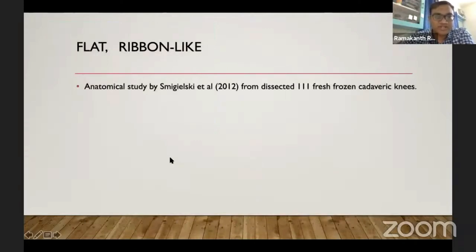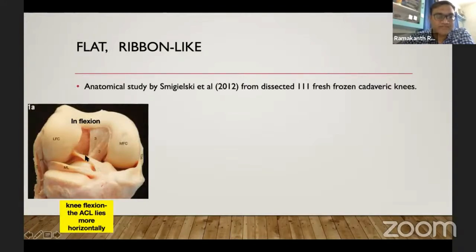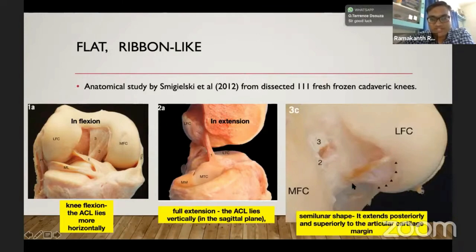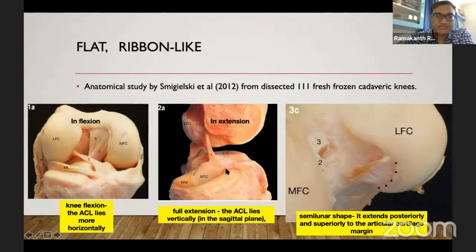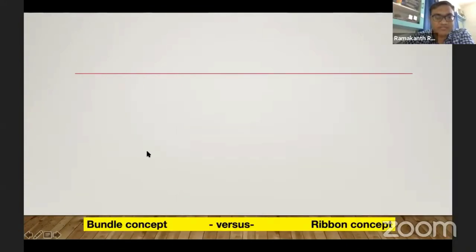The ribbon concept, described by Smigielski et al. in 2012, shows that the native ACL is a flat structure — a group of fibers forming a ribbon-like structure — which is horizontal when the knee is flexed and vertical when the knee is extended. The bundles together form the ribbon-like structure, then decussate and attach to their respective areas. The tibial attachment is broader than the femoral attachment; it is larger, broader, and triangular in shape with the apex directed posteriorly.